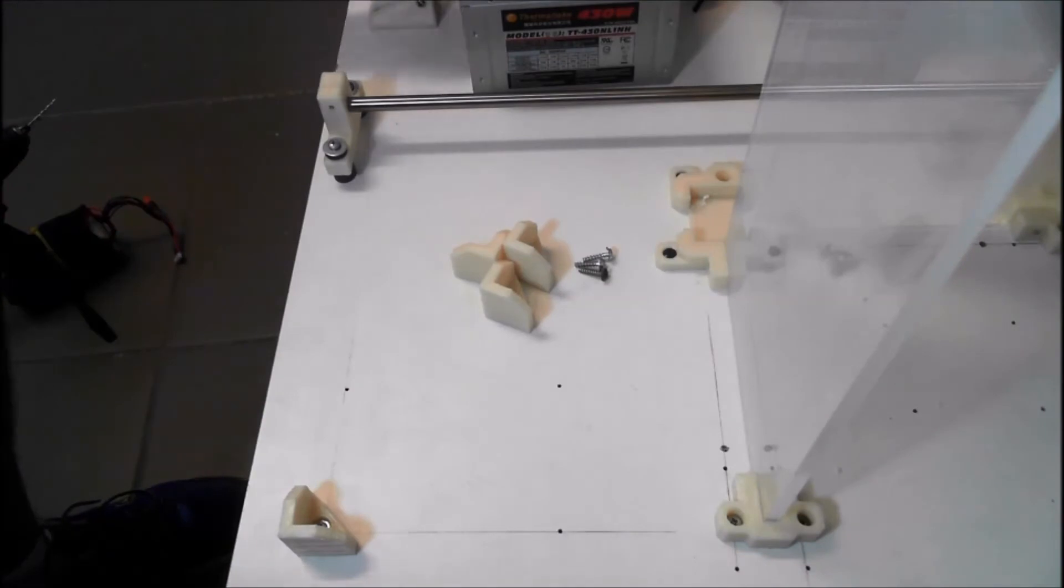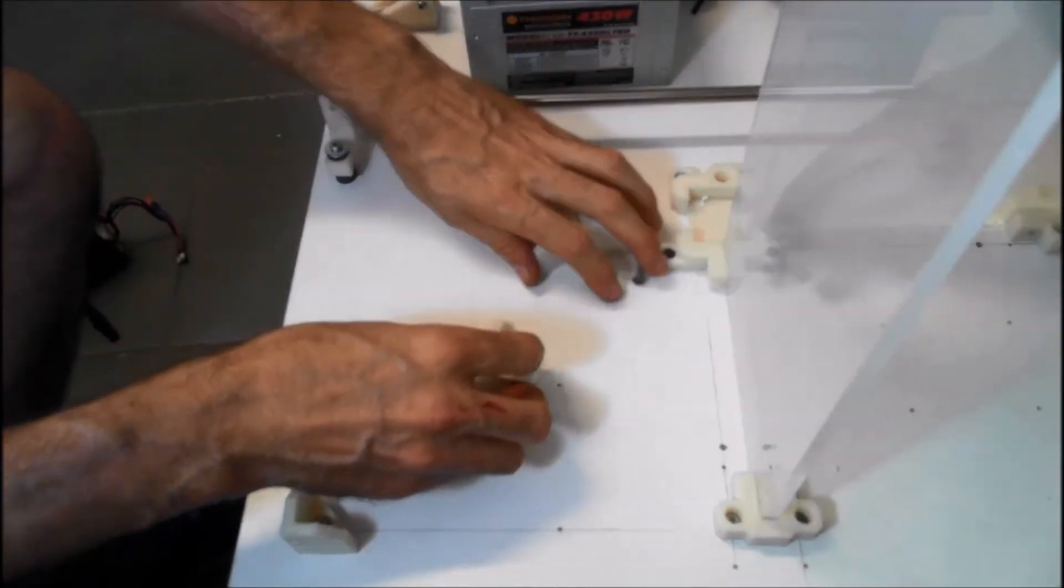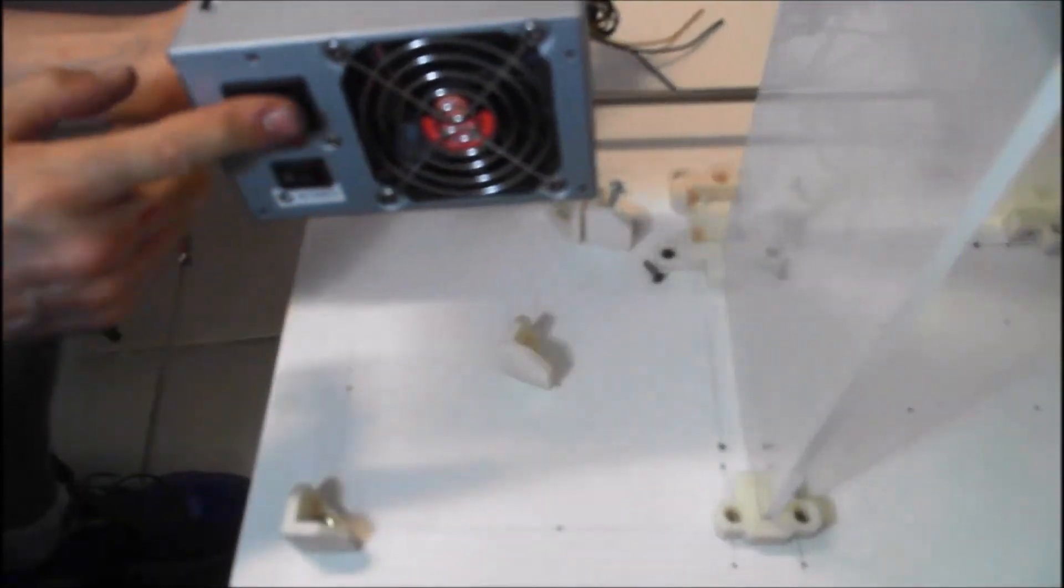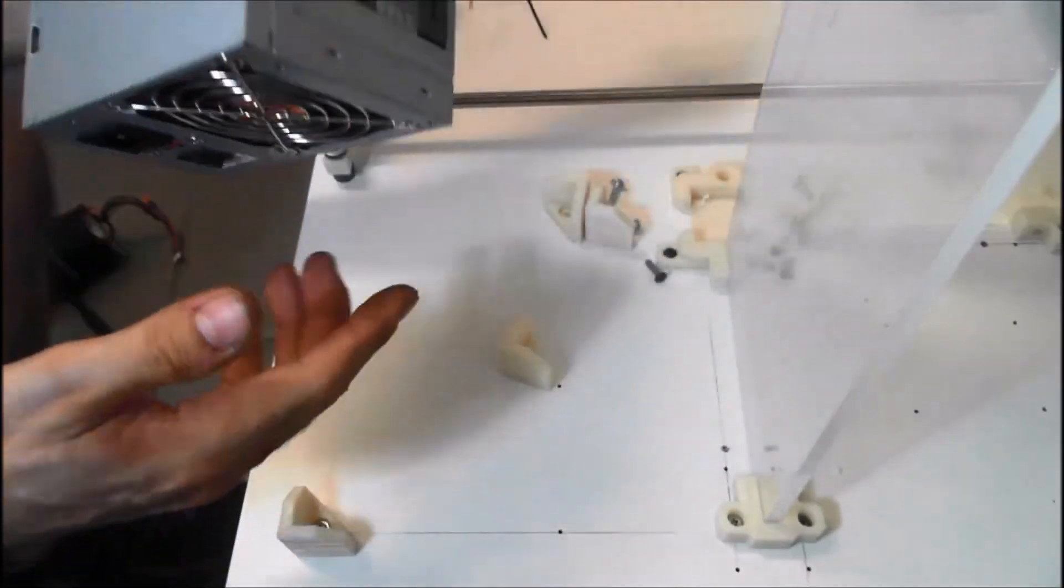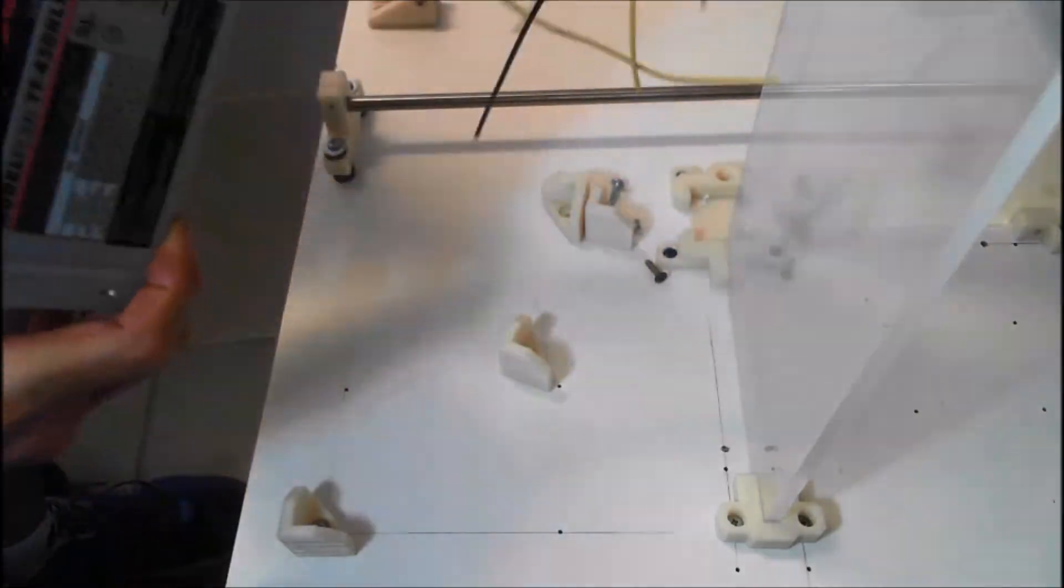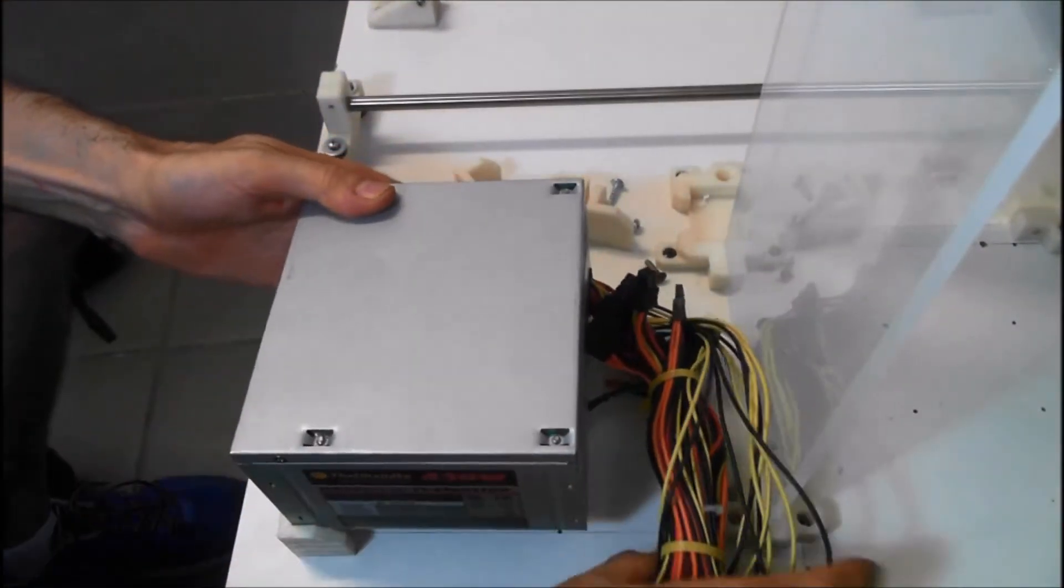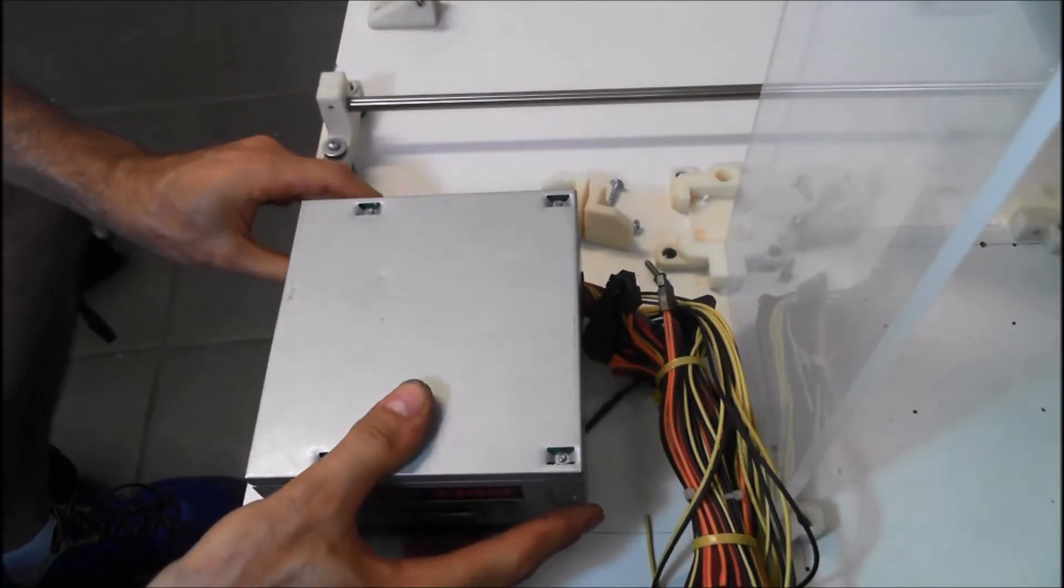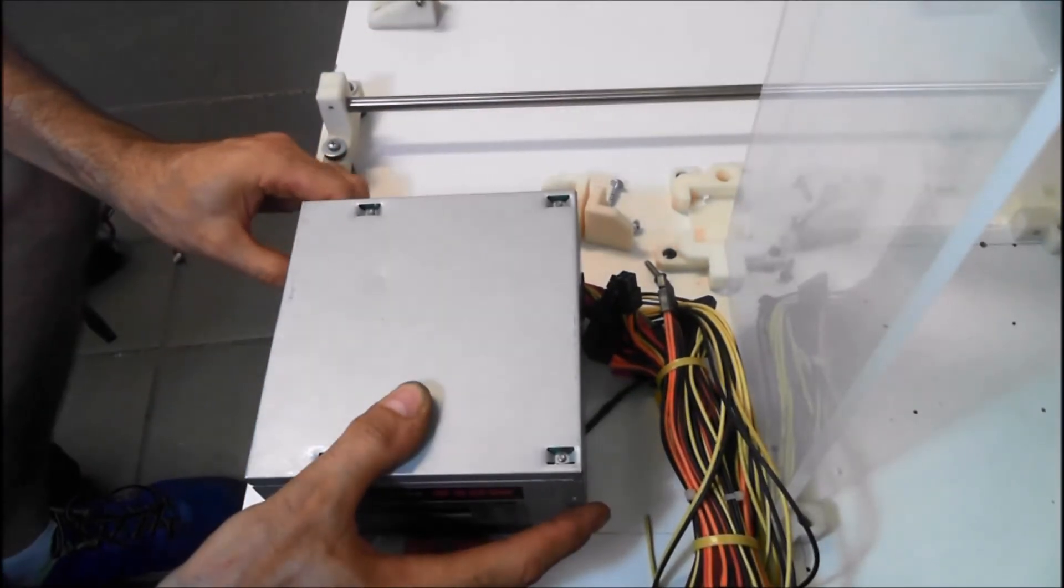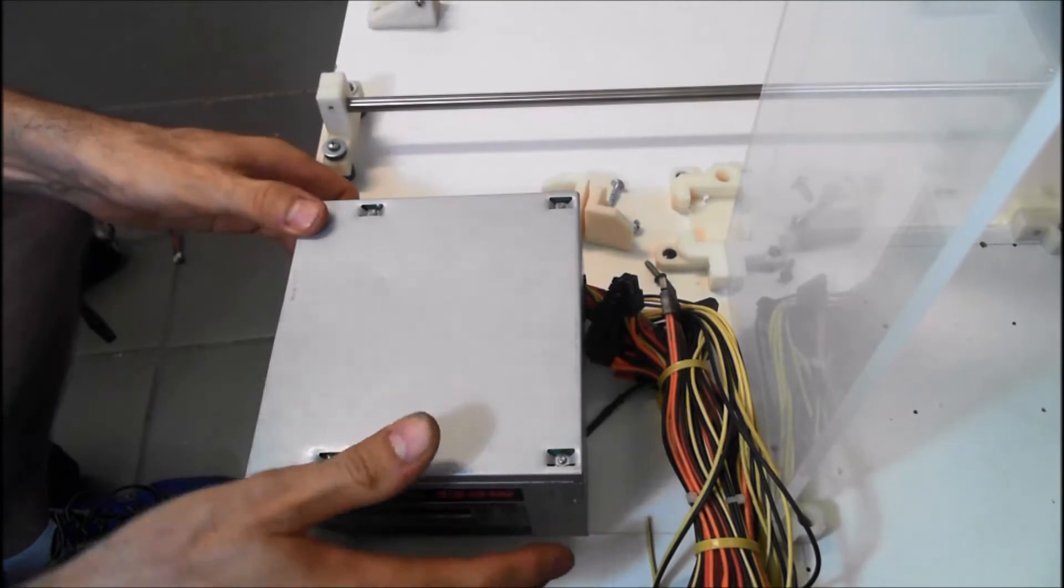Tighten it down. Now grab your power supply and the orientation we usually have is the power connector facing forward. We'll just do the next corner along the front. Just position it on the board.